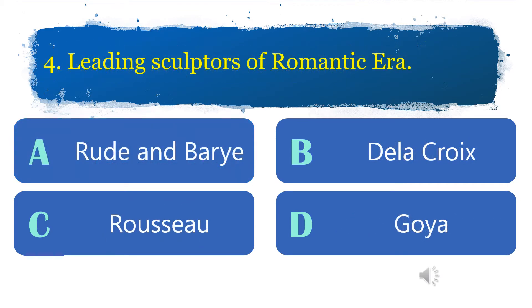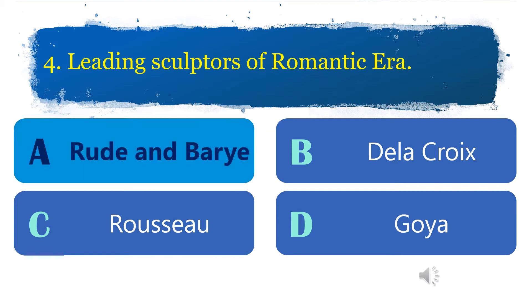Number 4: Leading sculptors of the Romantic era. A. Rude and Barry. B. Delacroix. C. Russo. D. Goya. If your answer is A, perfect.